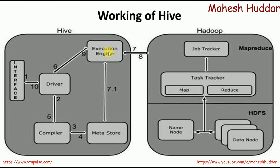The query is then sent to the execution engine. Before sending the query to the Hadoop environment, the execution engine first retrieves metadata information once again to verify the query. If it is correct, it converts the query into a MapReduce program and executes that MapReduce job on the Hadoop environment, fetching data from the HDFS cluster. Once the result is available, it is given back to the execution engine, which converts it into HiveQL result format and passes it back to the driver. The driver then returns the result to the user through the interface. This is how Apache Hive works.